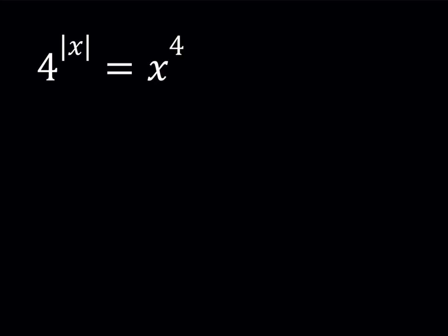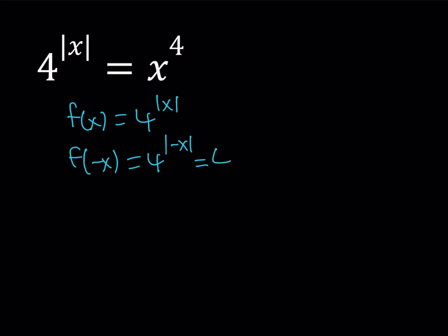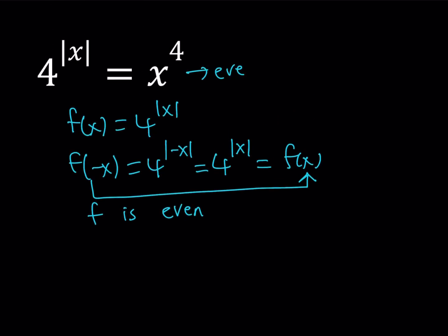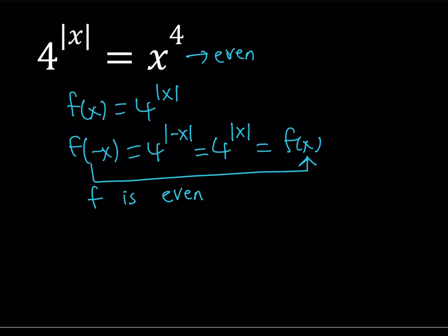Notice that we have the absolute value. So if you call this function f of x, and when you replace x with negative x, you're going to get 4 to the power absolute value of negative x, which is equal to 4 to the power absolute value of x, and that is equal to f of x. So we get f of negative x equals f of x for all x values, and this means that f is an even function.